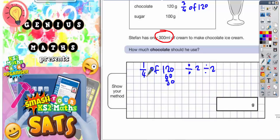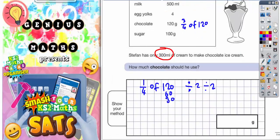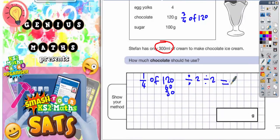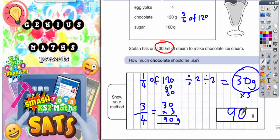And half that again is 30. So a quarter of 120 is 30. So if one quarter equals 30 grams, we want three quarters. So three quarters is going to be this 30 grams, which is one quarter, times 3. So it's 30 times by 3.